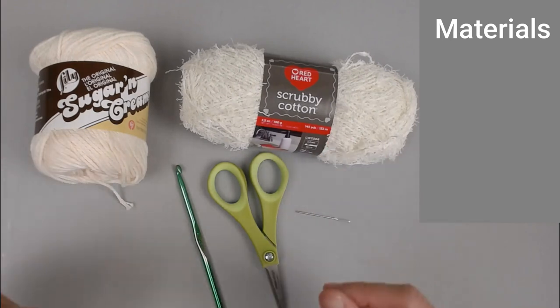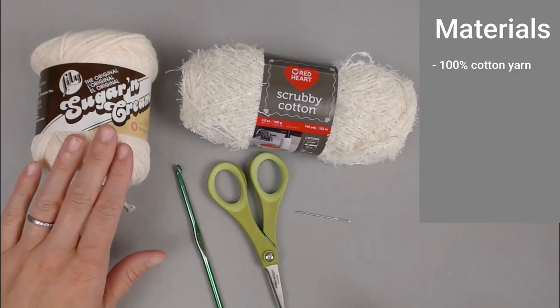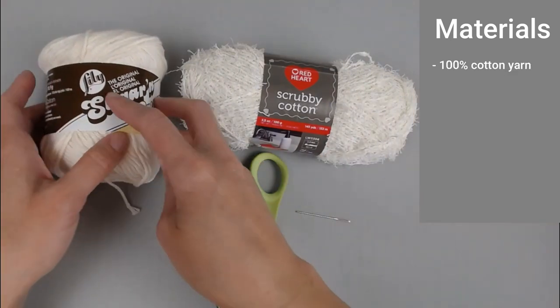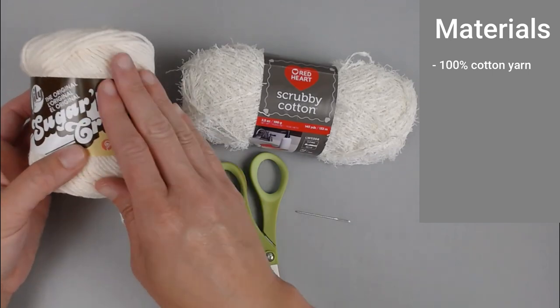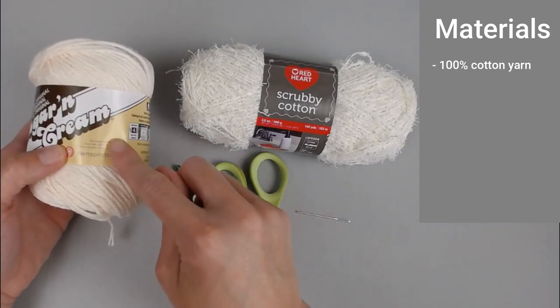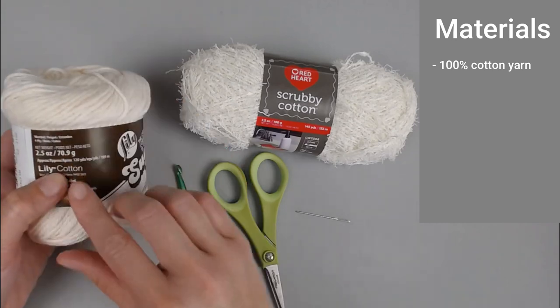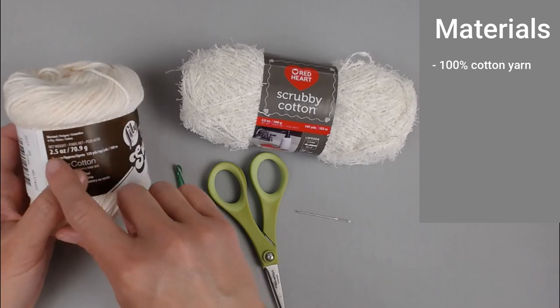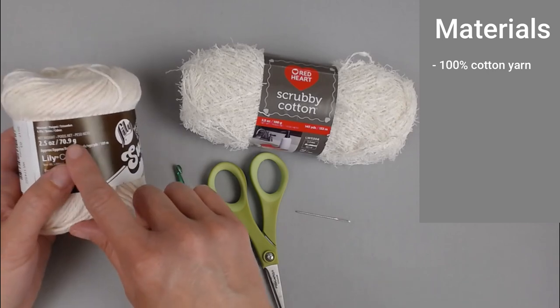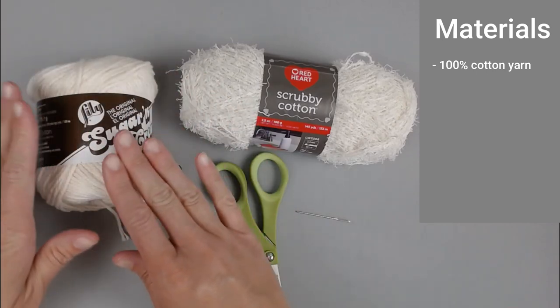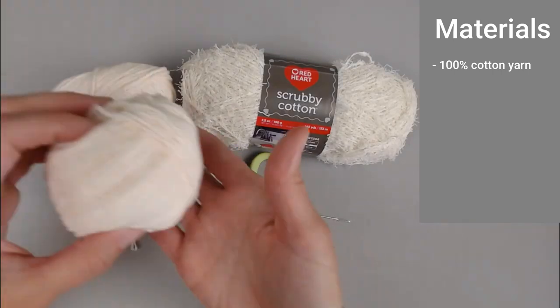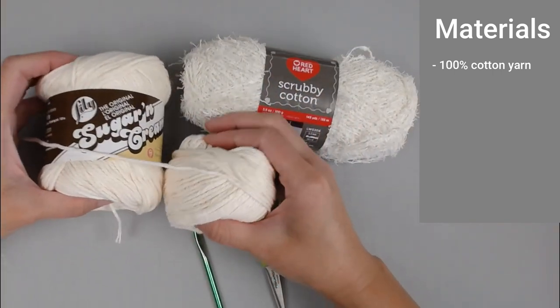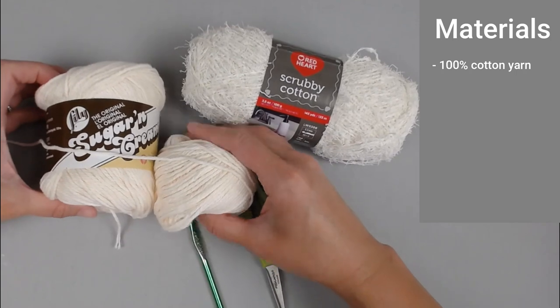The materials that you're going to need for the spa back scrub will include 100% cotton yarn. I used the Lily Sugar and Cream cotton yarn, the regular size, not the super-sized ball. This ball contains 120 yards of yarn, 109 meters, 2.5 ounces, or 70.9 grams of yarn. I used all but about a third to a fourth of the skein.